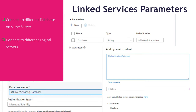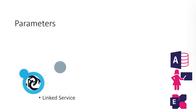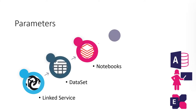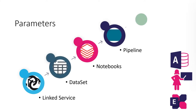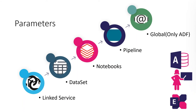So to summarize: we have parameters at different levels — linked services, datasets, notebooks, pipelines, and global. The global parameters can only be used in Data Factory and only within the pipeline. You can then use the pipeline parameters to pass through to the notebook, dataset, and linked services. I think it is time to do some demo.